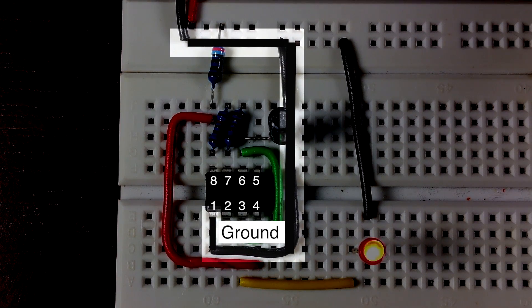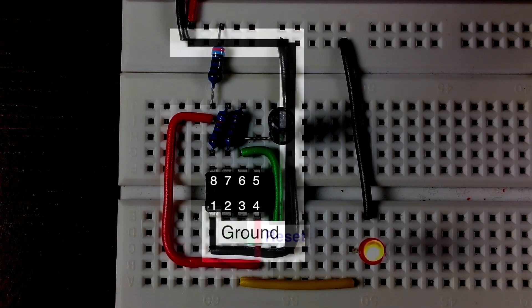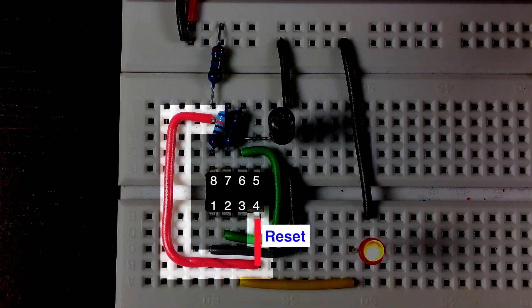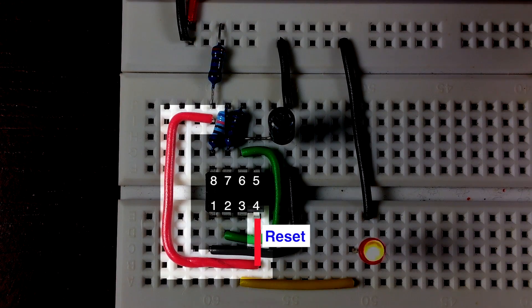Pin 1 should then be connected to the ground. Pin 4 is the reset, which is active low, so we want to pull it high by connecting it to the power source since we have no interest in resetting the 555 timer.